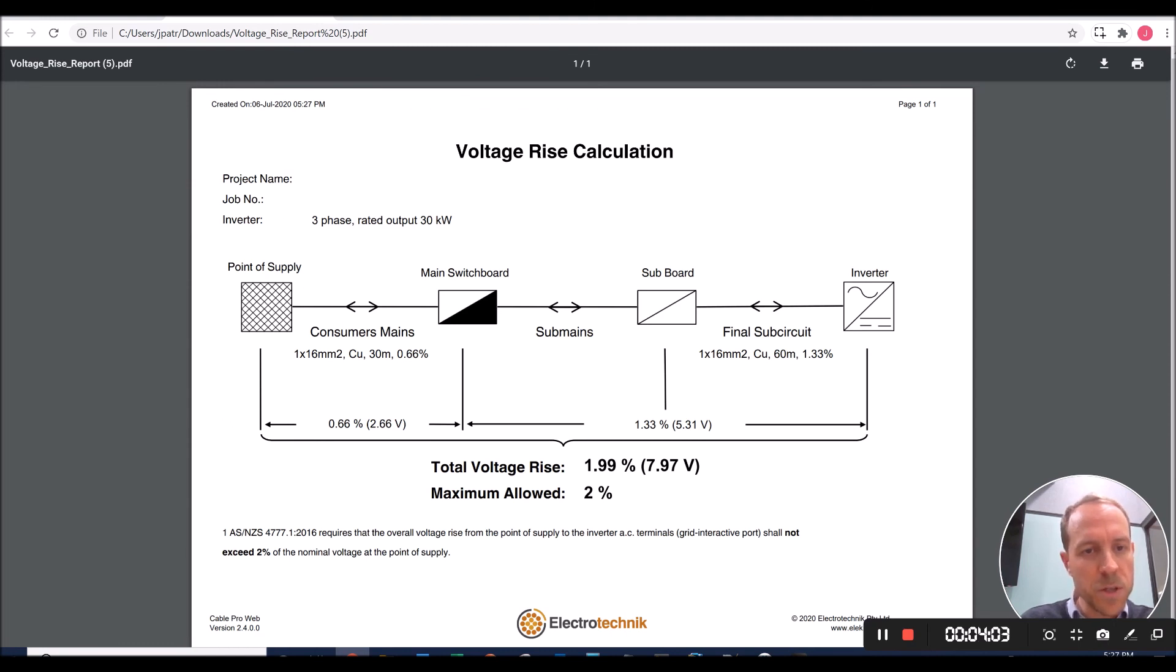Then we've got the consumer's mains. Again, we have a one circuit of 16 square millimeter copper conductor over 30 meters. Our voltage rise is 0.66%. Total voltage rise for the installation is 1.99% or 7.97 volts, which meets our requirement of a maximum voltage rise of 2%. There we have it. We have a nice complete report, which we can submit to our power authority for approval.